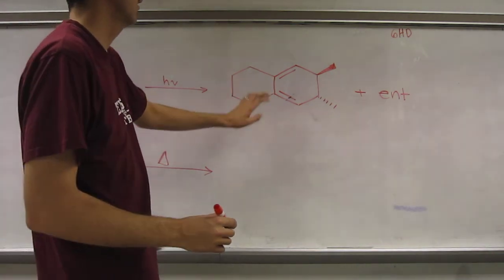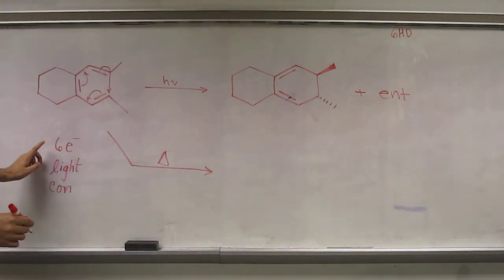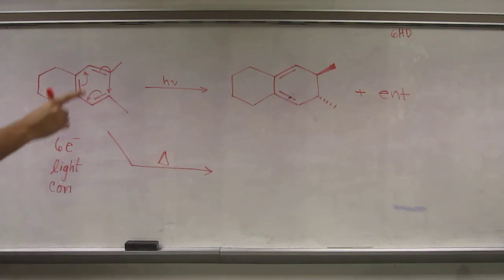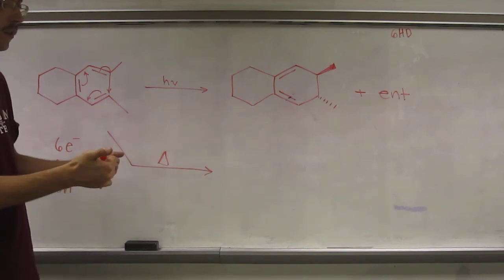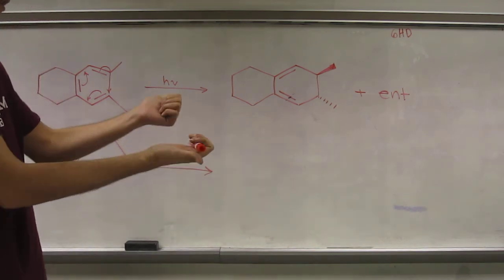But your product is going to be different, because six-electron light is con, six-electron heat is dis, like six HD. So they're going to turn opposite ways.